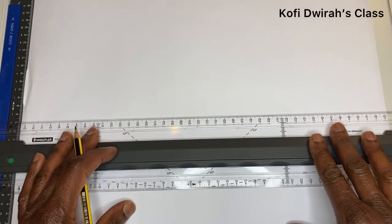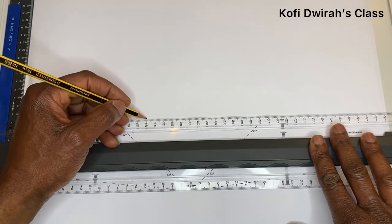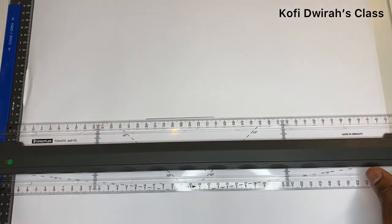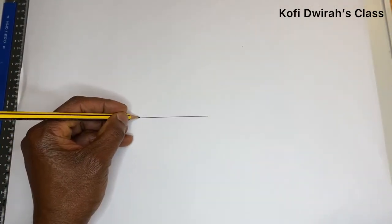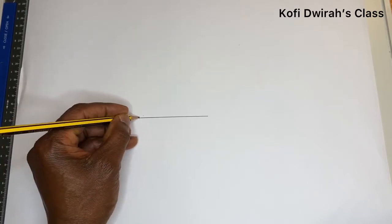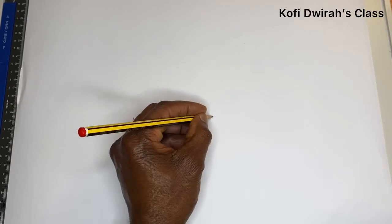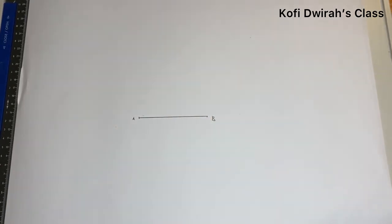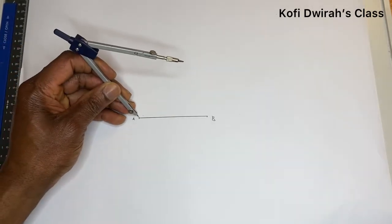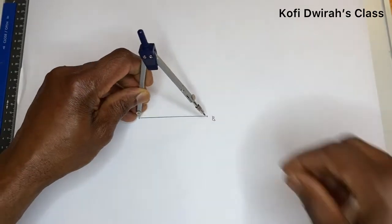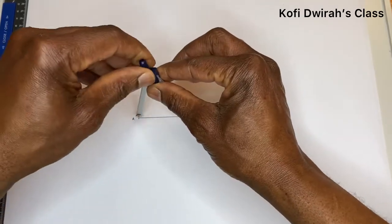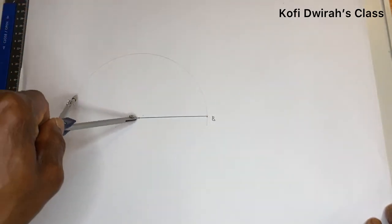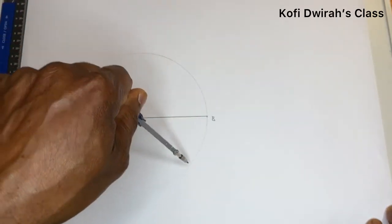So first, we draw the side of the pentagon. We consider this to be the side of the pentagon. You have point A and point B. So this is one side of the pentagon. Then at point A, you open the compass to B — that length being the side of the pentagon — then you draw a circle.